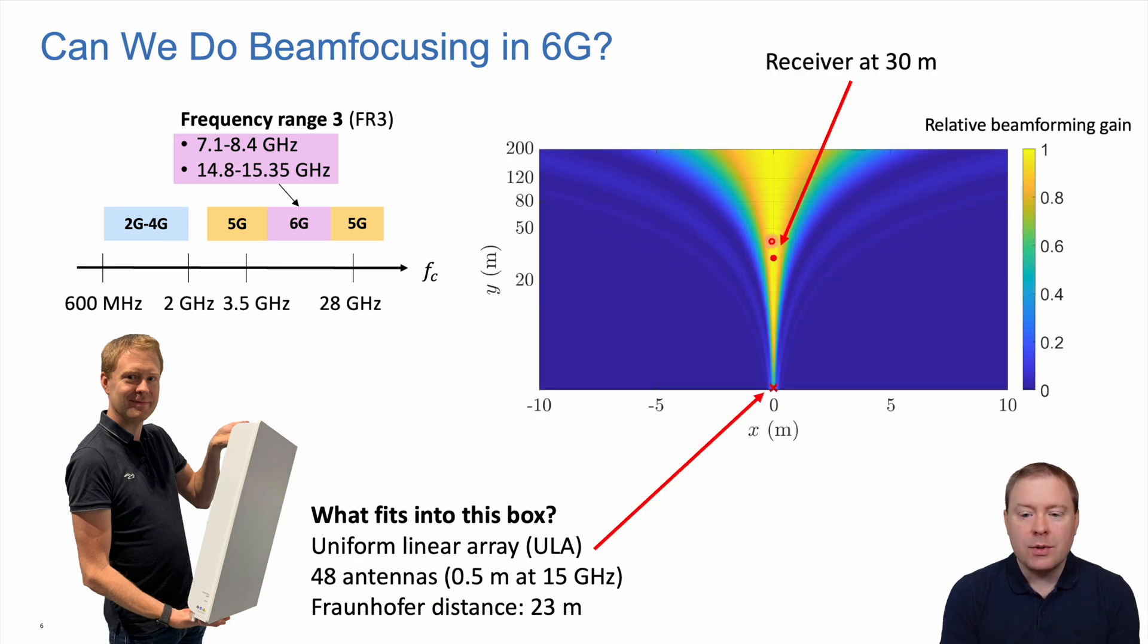At the typical user distance of 30 meters or more from the base station, you'll see a classical beam. This illustration shows relative beamforming gain between 0 and 1. Beam focusing is not something we'll actually see in the 6G era if we deploy antennas like this, but there are other options.